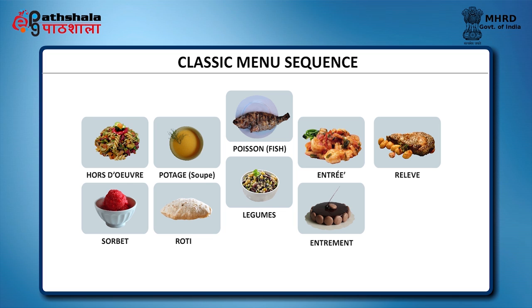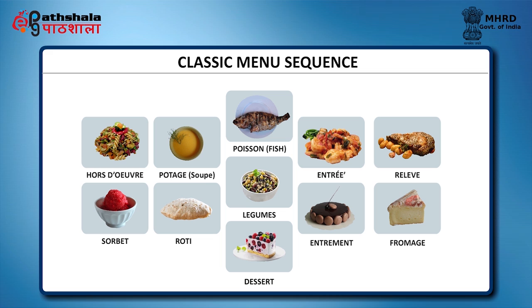The ninth course is entremets, a sweet course where hot or cold puddings and sweets are served. The tenth course is fromage, meaning different types of cheeses, considered as a single course. The last course is dessert, offering fresh and dried fruits. After the 11 courses, coffee is served — customary at the end of the meal in French cuisine. In continental cuisine, desserts could include traditional sweets such as cakes, pastries or pies as well as various types of cheeses or cheese platters.